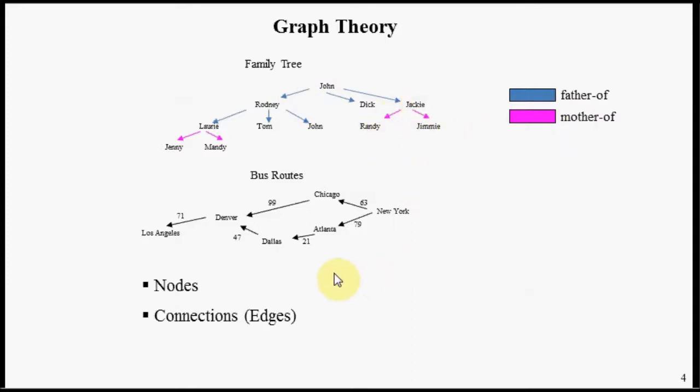Sometimes with graphs, you have scalar values associated with the connections. In this bus routes example, the scalar value represents a cost of going from one city to another.